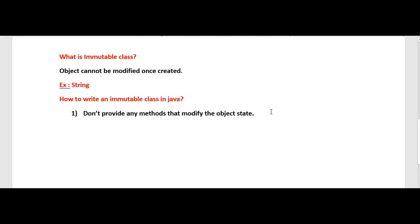The second rule is: all the fields of an immutable class should be final. All the properties, fields, or variables defined in an immutable class should be declared as final.